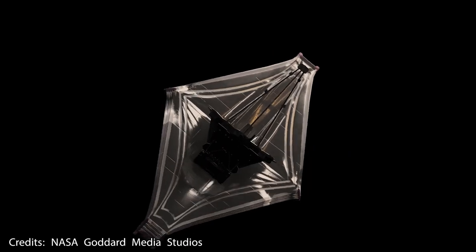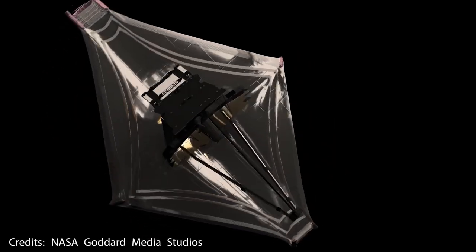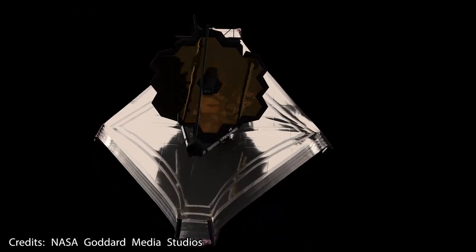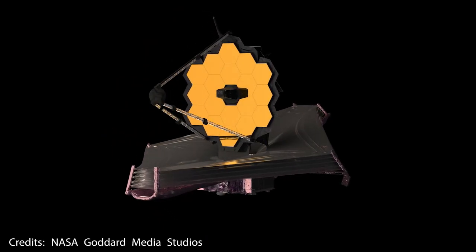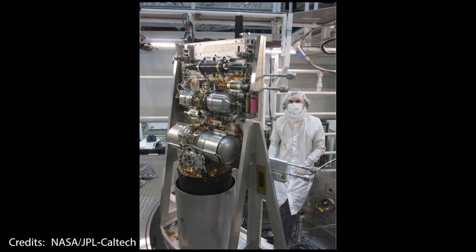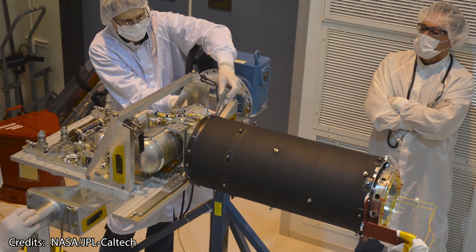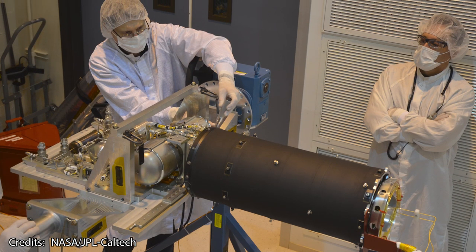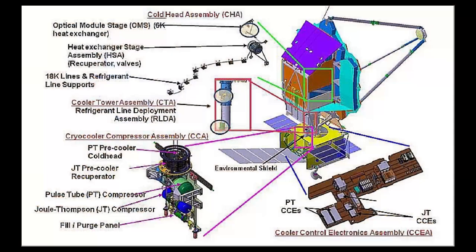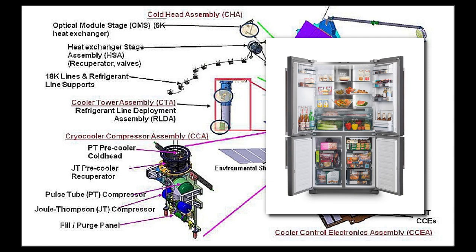This extreme temperature isn't possible to reach just by using the passive cooling that being in deep space with a tennis court sized sunshield offers. So MIRI needs a little help to work properly, and the little help came in form of a super advanced state-of-the-art cryocooler developed by Northrop Grumman. That may sound fancy, but basically this cooling system works very similar to how your fridge at home cools down your food, only a little more complicated. But in principle, it's kind of the same process.